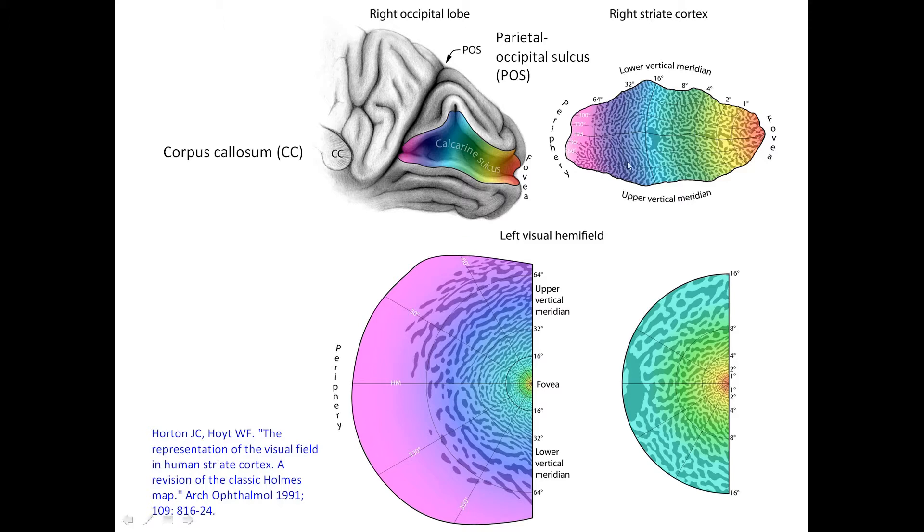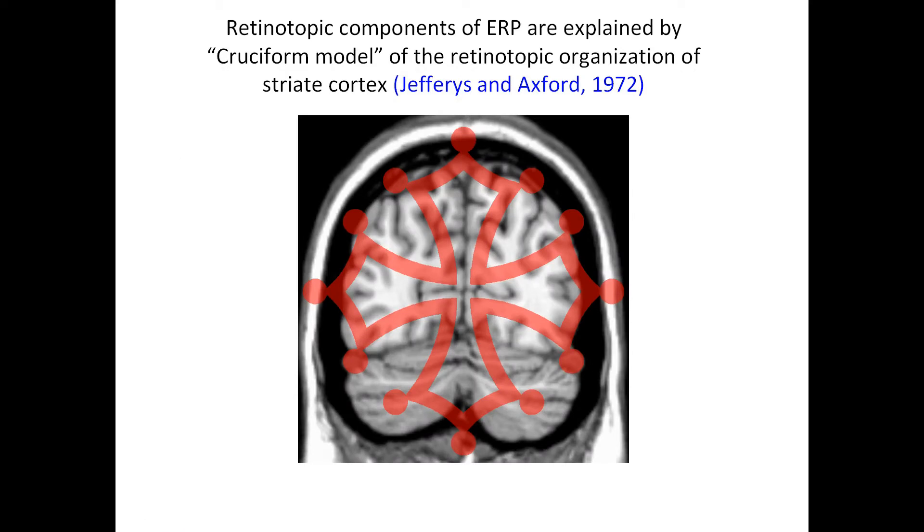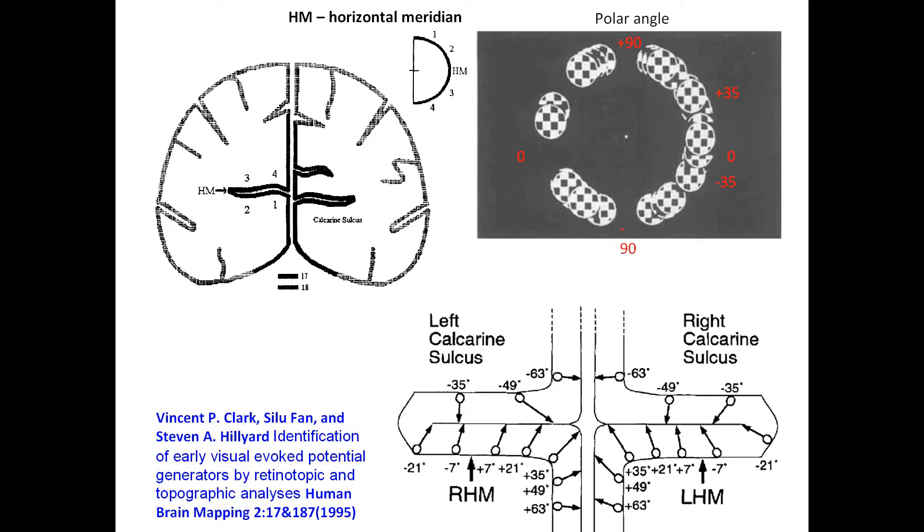We are going to be focused on this part of the visual field, which is the periphery. One of the reasons is that this part of the primary visual cortex has the best shape which corresponds to our task and which fits to this cruciform model proposed long ago by Jeffrey. This model explains why the voltage of the event-related response at the surface of the occipital part of our head have opposite voltage, negative or positive, as a function of where the stimulus is shown in the top of the visual field or in the bottom of the visual field.